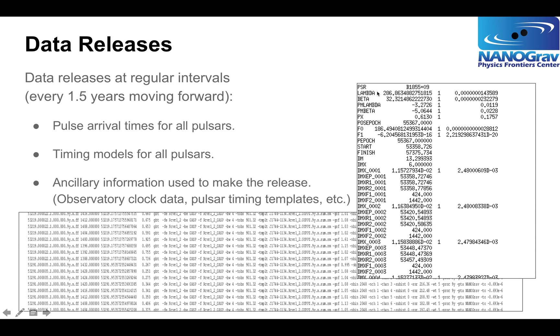We also have the timing model for each pulsar. This is pulsar B1855+09, showing part of the timing model. Its position in the sky in ecliptic coordinates, lambda and beta, the proper motion, parallax, the spin frequency. This pulsar rotates 186.494081249 times per second, the rate at which that spin frequency is changing, dispersion measure describing the propagation of the signal through space. And if we saw the rest of this file, we would see parameters of the binary system that this pulsar is in.